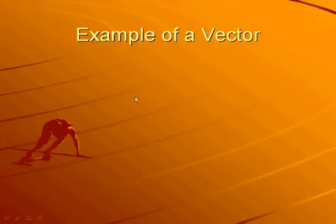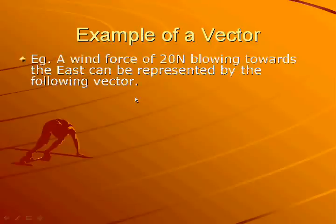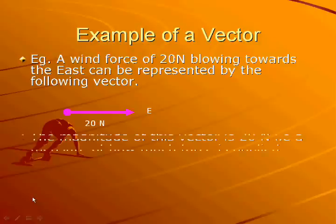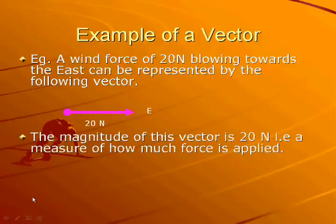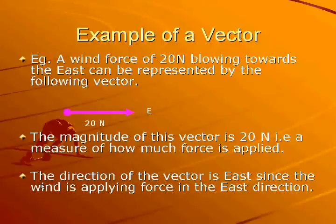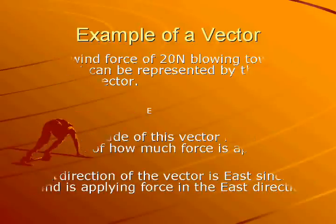Here is an example of a vector. A wind force of 20 N blowing towards the east can be represented by the following vector. The magnitude of this vector is 20 N — that is a measure of how much force is applied — and the direction of the vector is east, since the wind is applying force in the east direction.